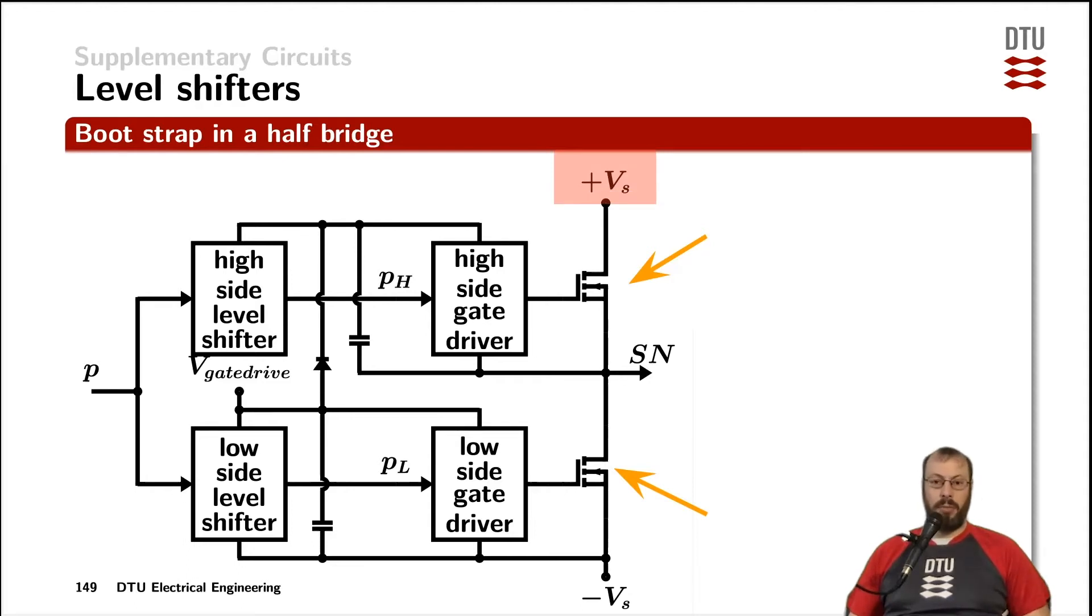For example, in half bridge operation, the positive supply voltage and the source of the low side device is connected to the negative supply voltage or ground. The input signal to that circuit is the pulses that we are getting from the pulse width modulation circuit. In any case, we want to control the gate source voltage of both the low side and the high side device.